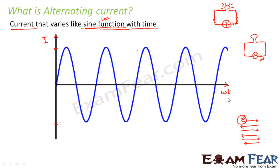This plot gives you the variation of alternating current with time. Just as there is a DC voltage corresponding to DC current, there is a corresponding alternating voltage which drives the alternating current. We define alternating current as i = Im sin(ωt). As shown in the graph, it varies like a sine function.